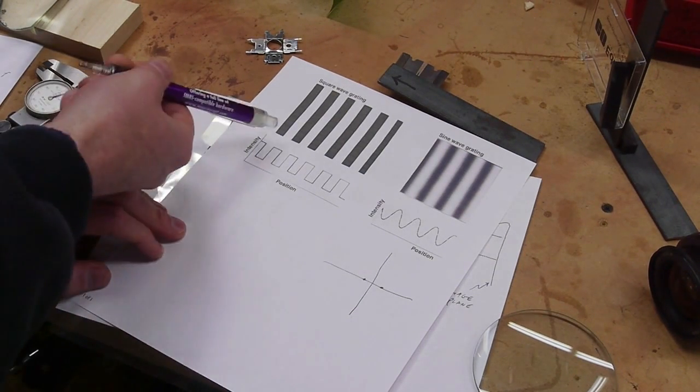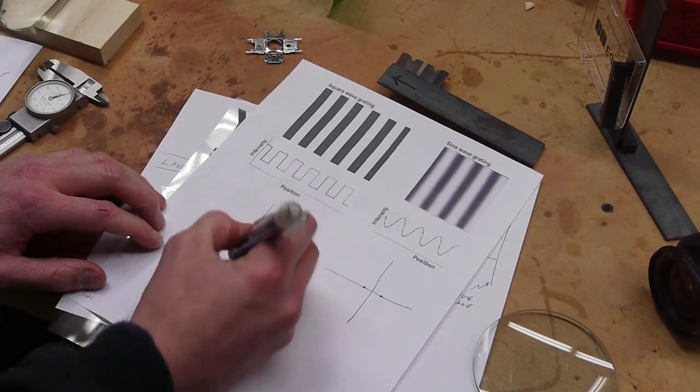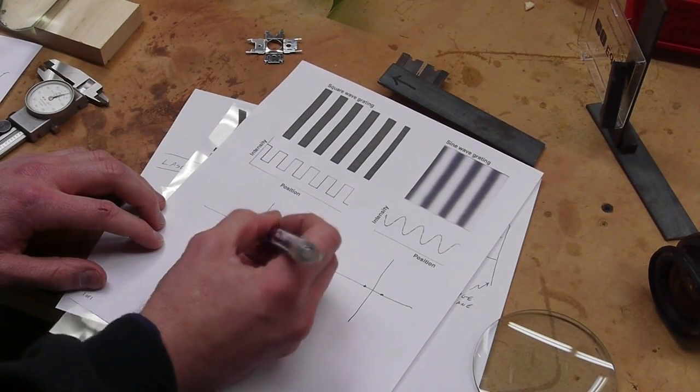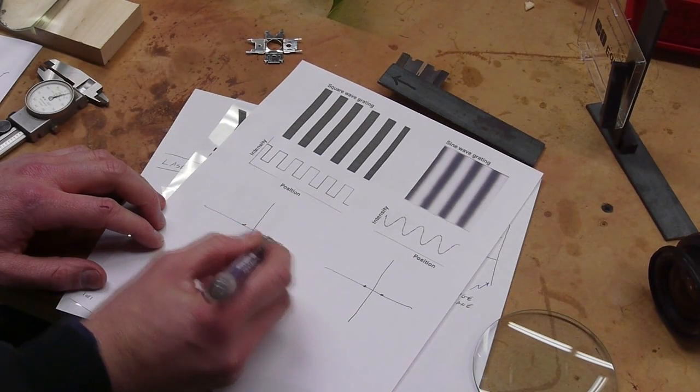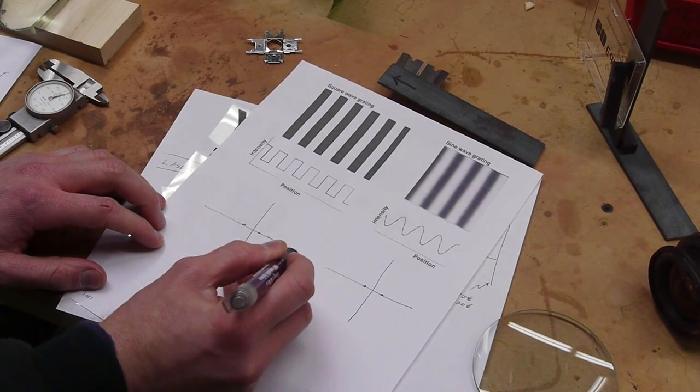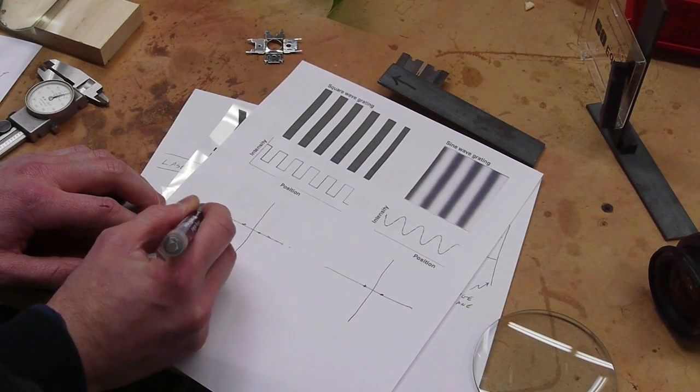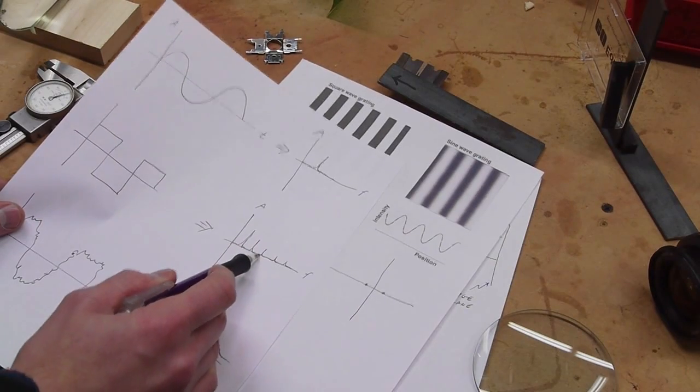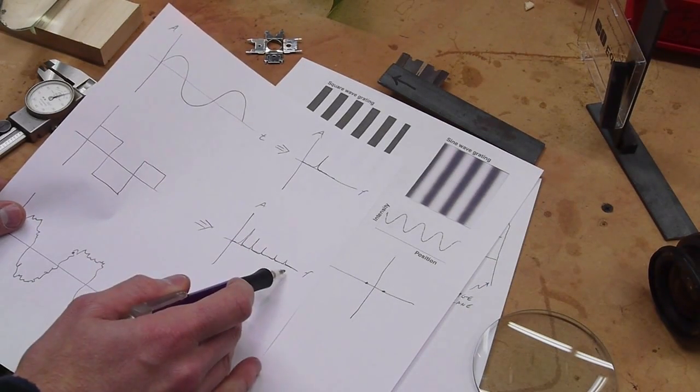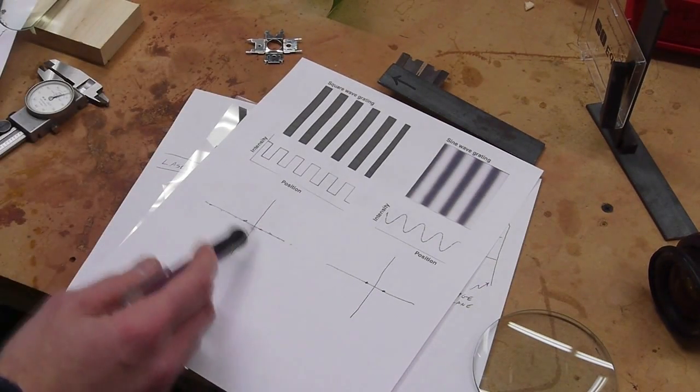Similarly, if we were to take the Fourier transform of this image, we would have the fundamental being really bright with two little dots there, and then decreasing in intensity with more and more dots going off the x-axis. This is the same as the temporal case with decreasing intensities of the harmonics creating the square wave.